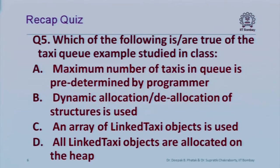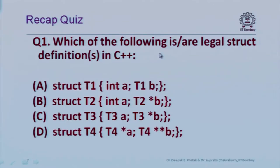Fourth question: which of the following are true of the taxi queue example? Options: the maximum number of taxis is predetermined; dynamic allocation and deallocation of structures is used; an array of link_taxi objects is used; and all link_taxi objects are allocated on the heap. Let's discuss the solutions.